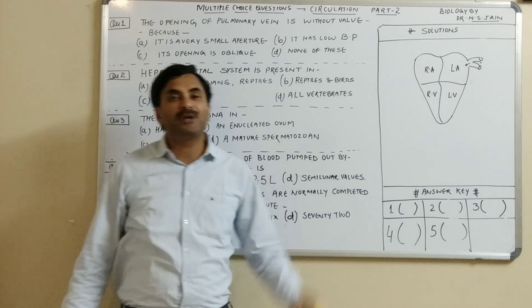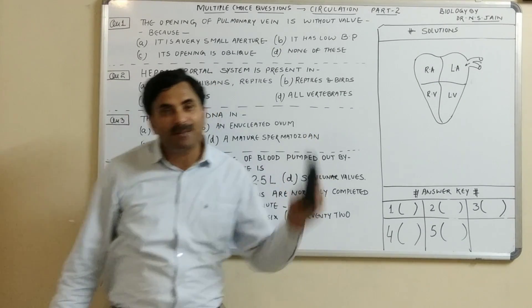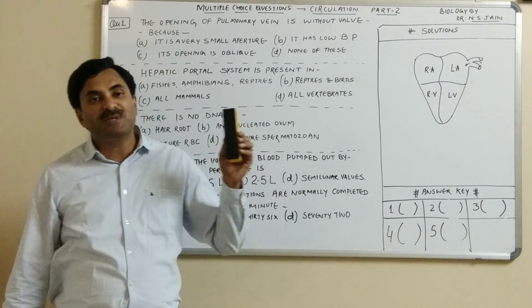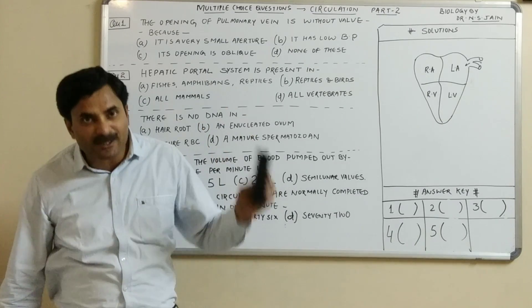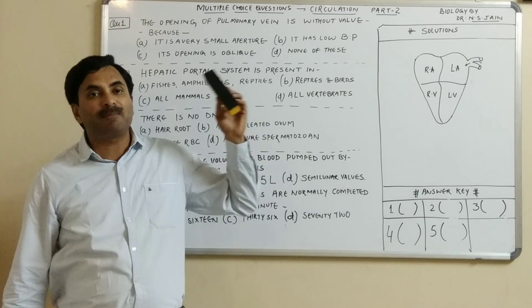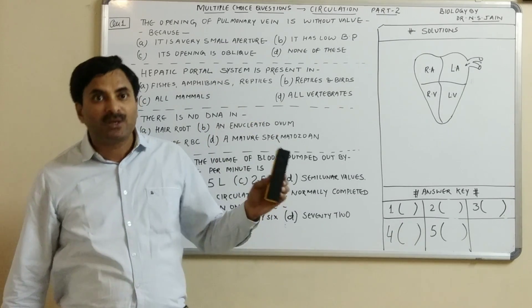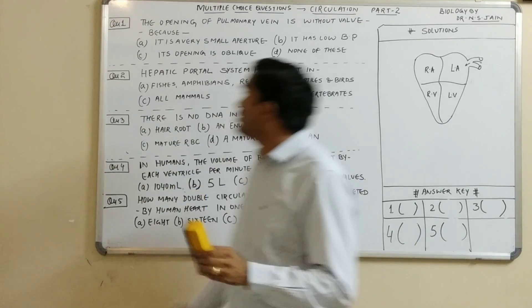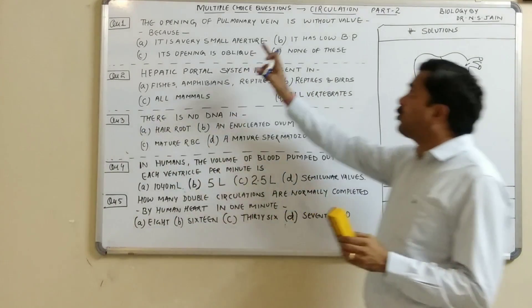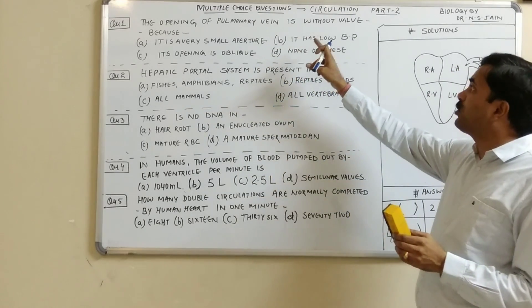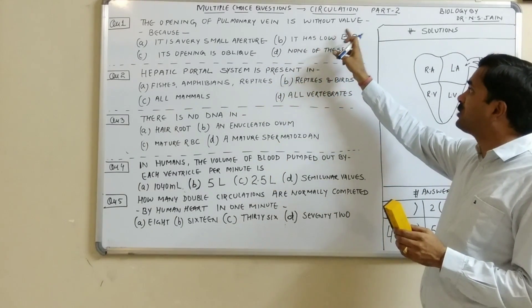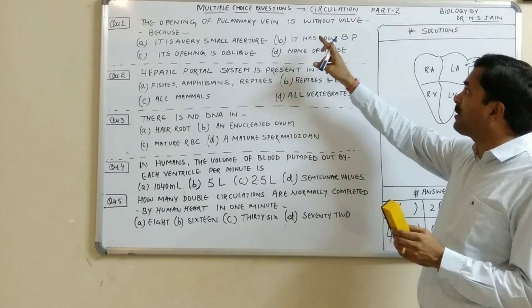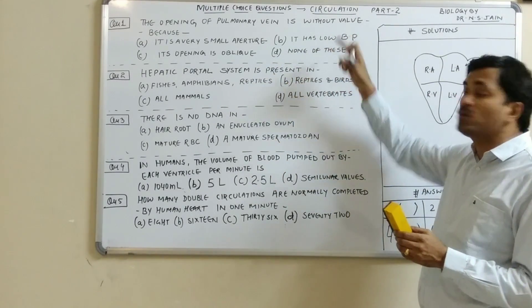Hello students, today we are going to discuss MCQs based on the circulatory system. This is part 2. The very first question is: the opening of the pulmonary vein is without valve.